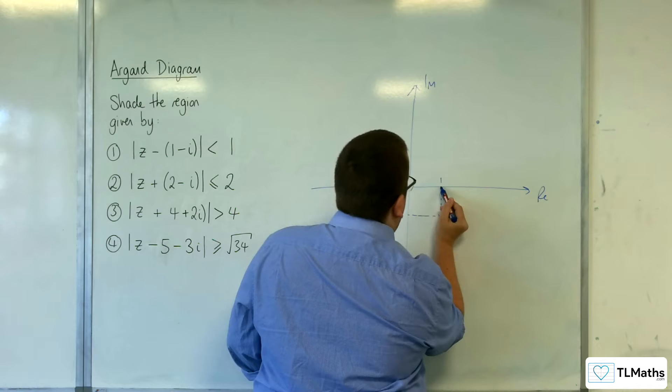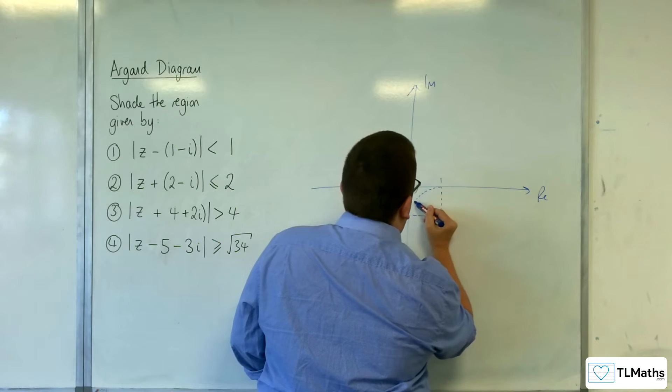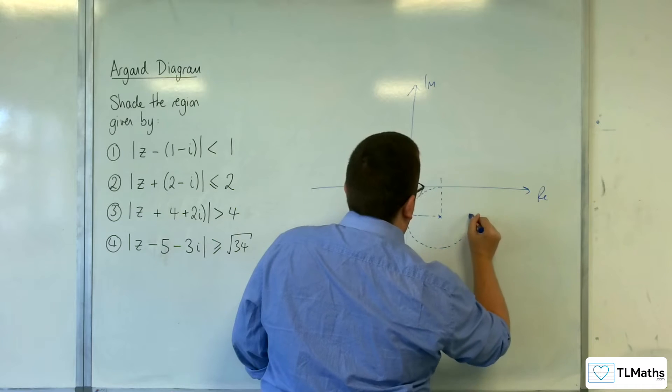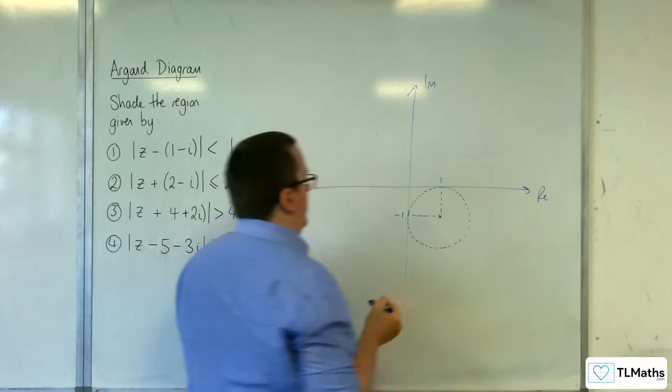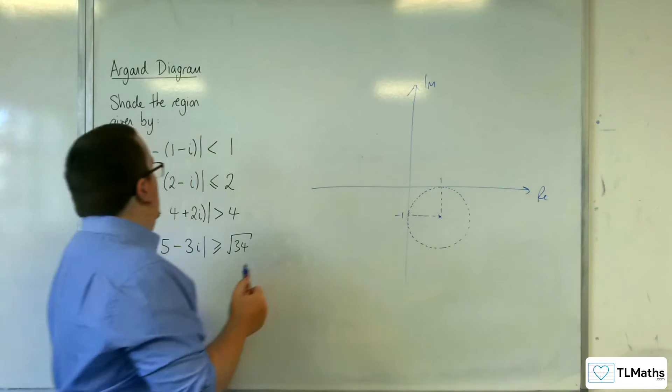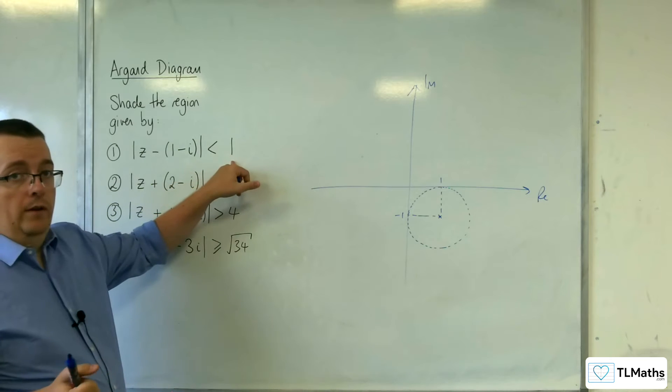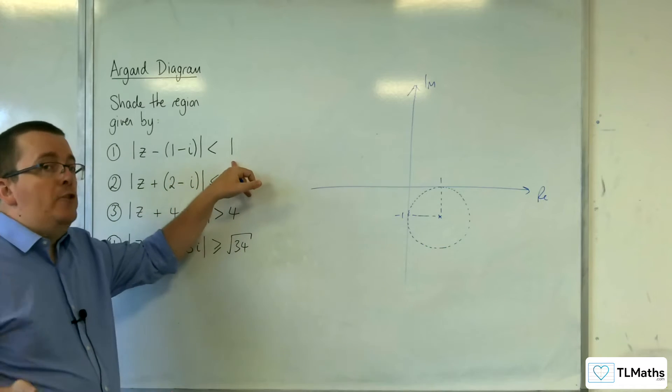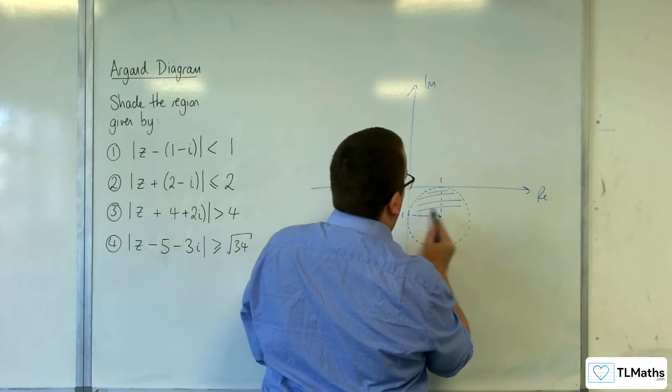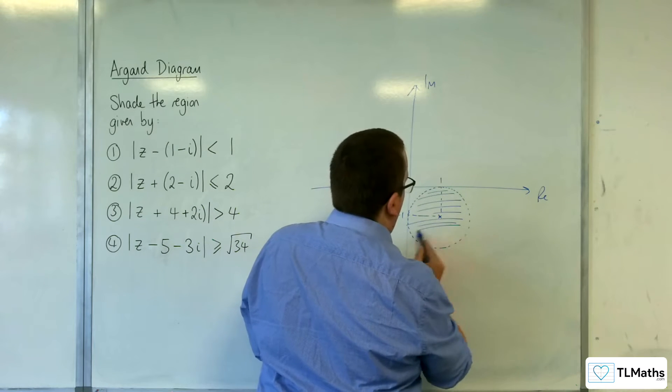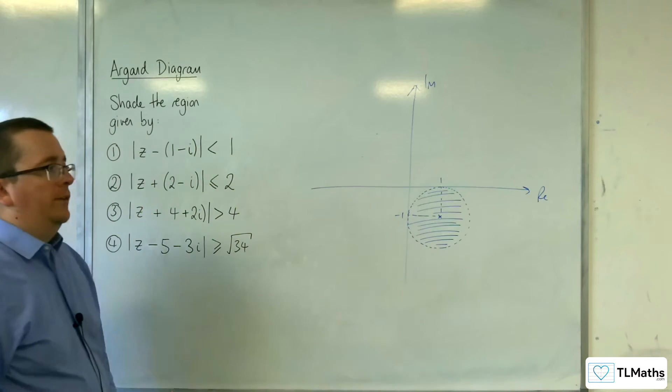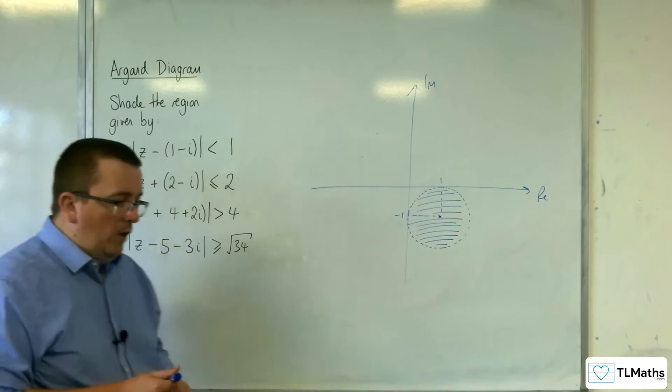And we've got the radius is going to be 1. So that means that we've got our circle doing something like that. So that would be our circle. And because we're doing less than 1, that means you want the interior of the circle to be shaded. So that would be the region that you want to consider.